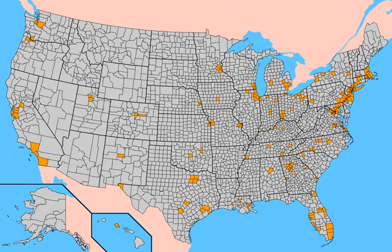Article 2, Section 1, Clause 2 of the Constitution states: 'Each state shall appoint, in such manner as the legislature thereof may direct, a number of electors, equal to the whole number of senators and representatives to which the state may be entitled in the Congress, but no senator or representative, or person holding an office of trust or profit under the United States, shall be appointed an elector.' Article 2, Section 1, Clause 4 of the Constitution states: 'The Congress may determine the time of choosing the electors, and the day on which they shall give their votes, which day shall be the same throughout the United States.'